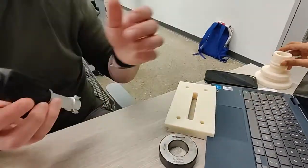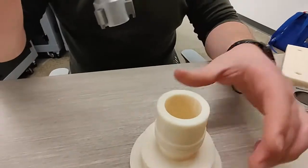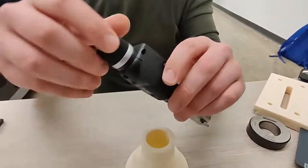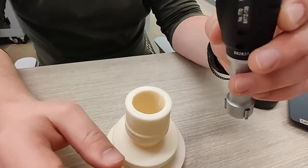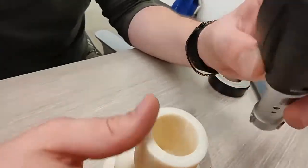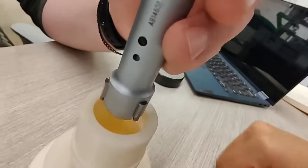For example, if we want to measure this bore, we would rotate the spindle counterclockwise to retract the anvils.